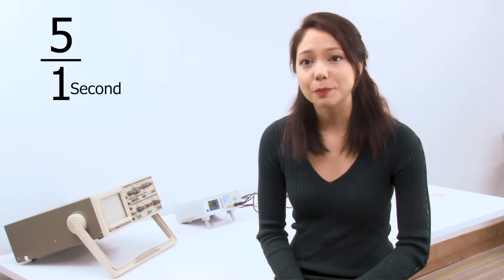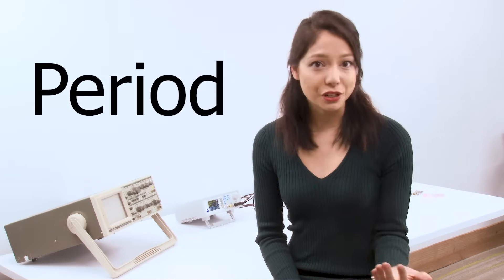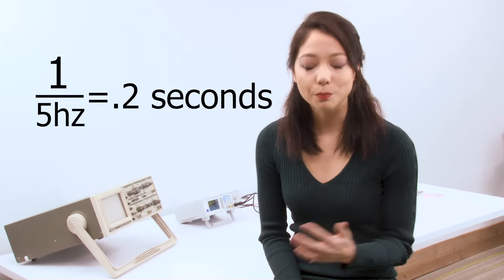For example, if you jump on a bed or make an LED blink five times per second, which is five hertz, how long is the wait between blinks? The answer is the period of the signal. In this case, one divided by five hertz, which is 0.2 seconds.